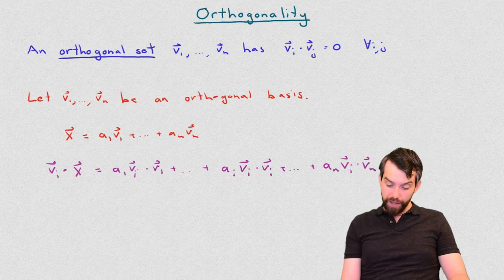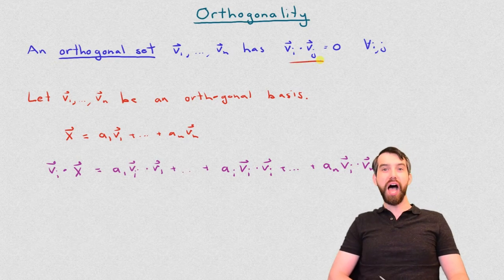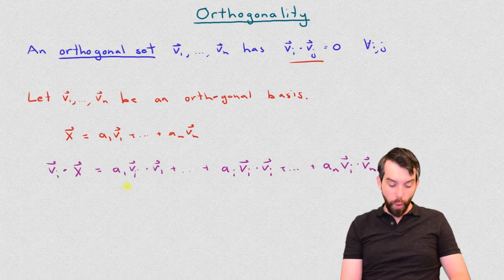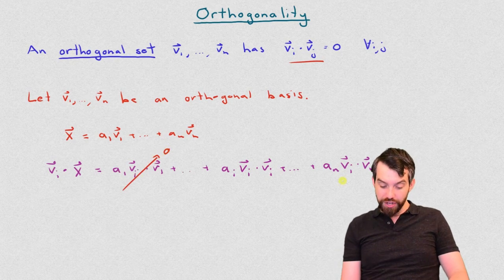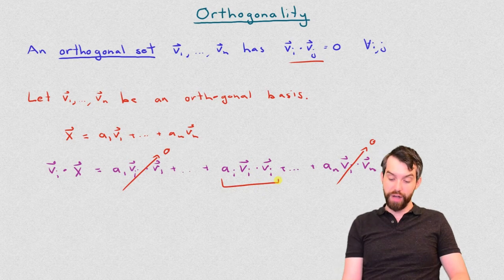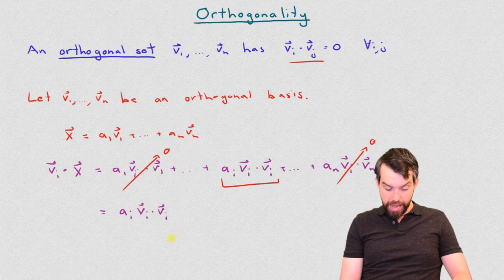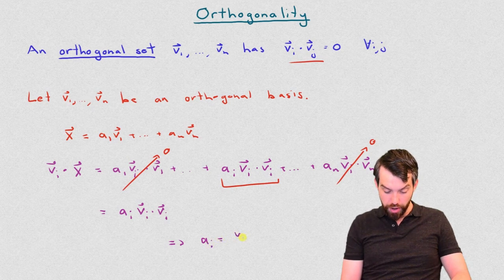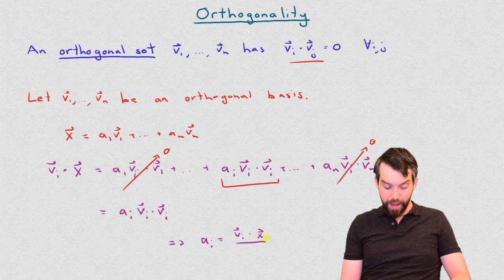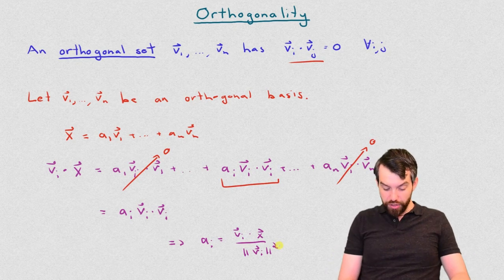Now here's the key point. Because it's an orthogonal basis, the vast majority of these v_i dot v_j terms are zero. For instance, v_i dot v1 is zero unless i equals 1, and v_i dot v_n is zero unless i equals n. The only term that survives and remains non-zero is a_i times v_i dotted with v_i. Rearranging, we get that a_i equals v_i dotted with x, all divided by v_i dotted with v_i — which is another way of saying the length of v_i squared.